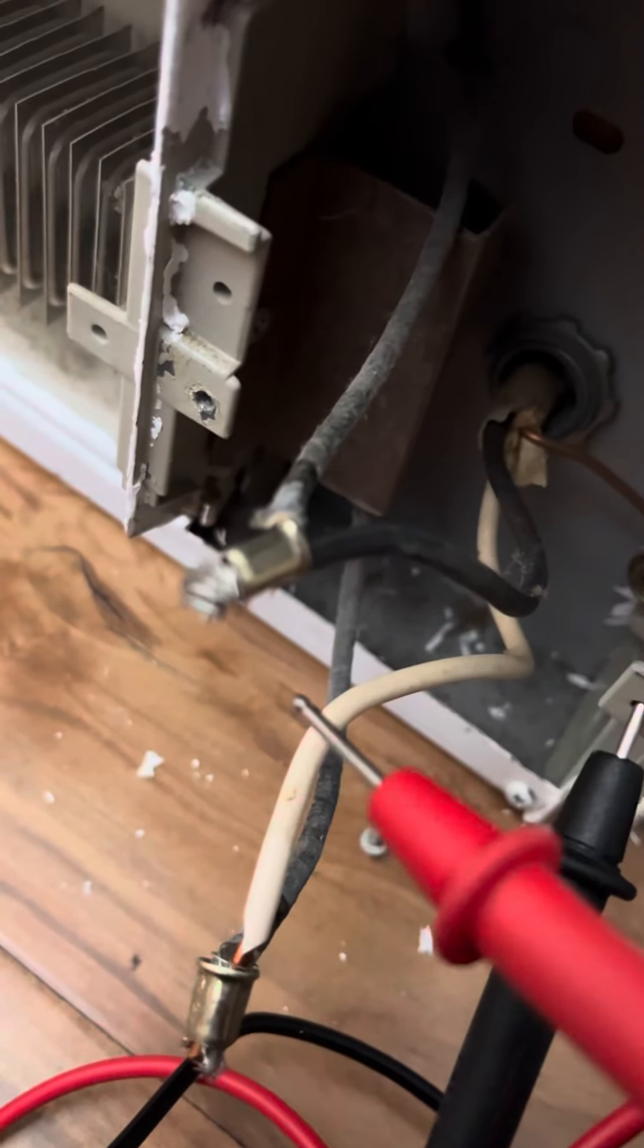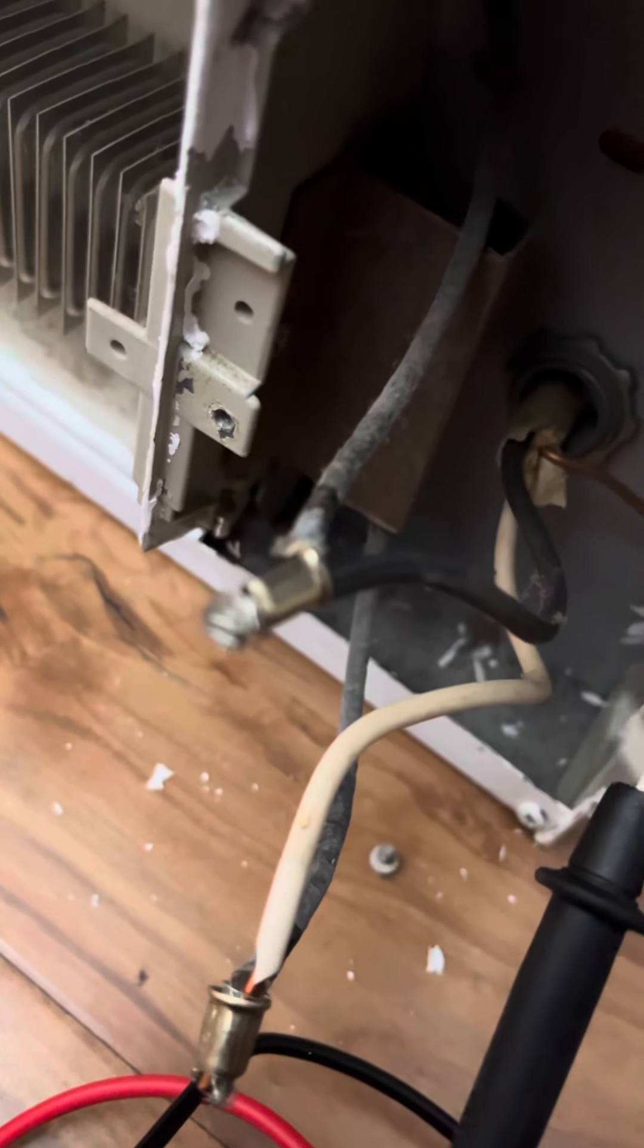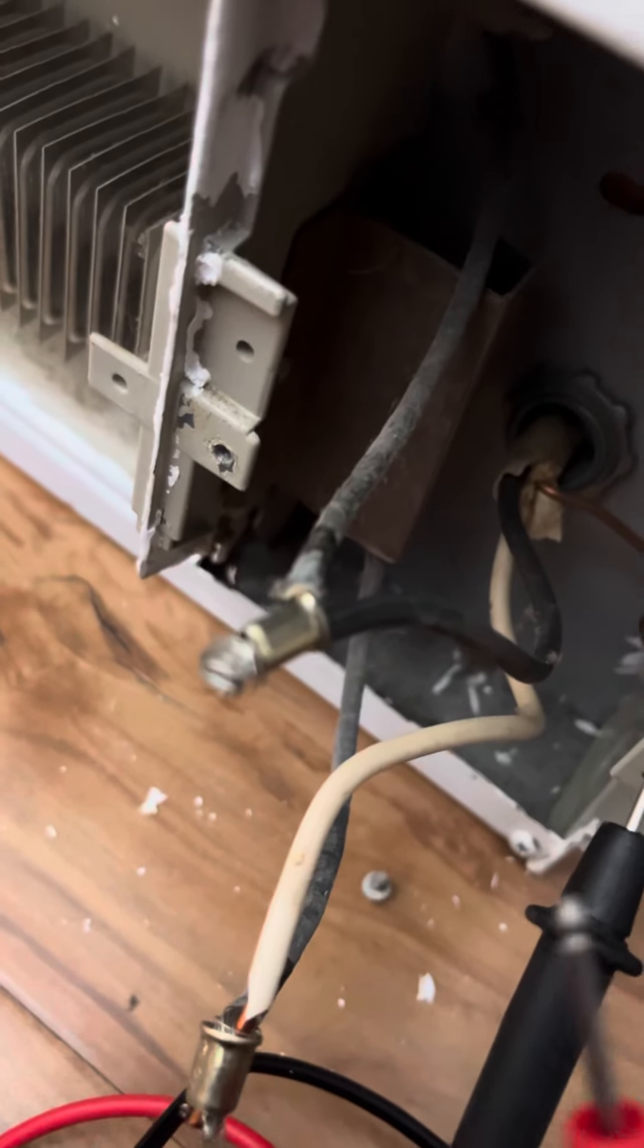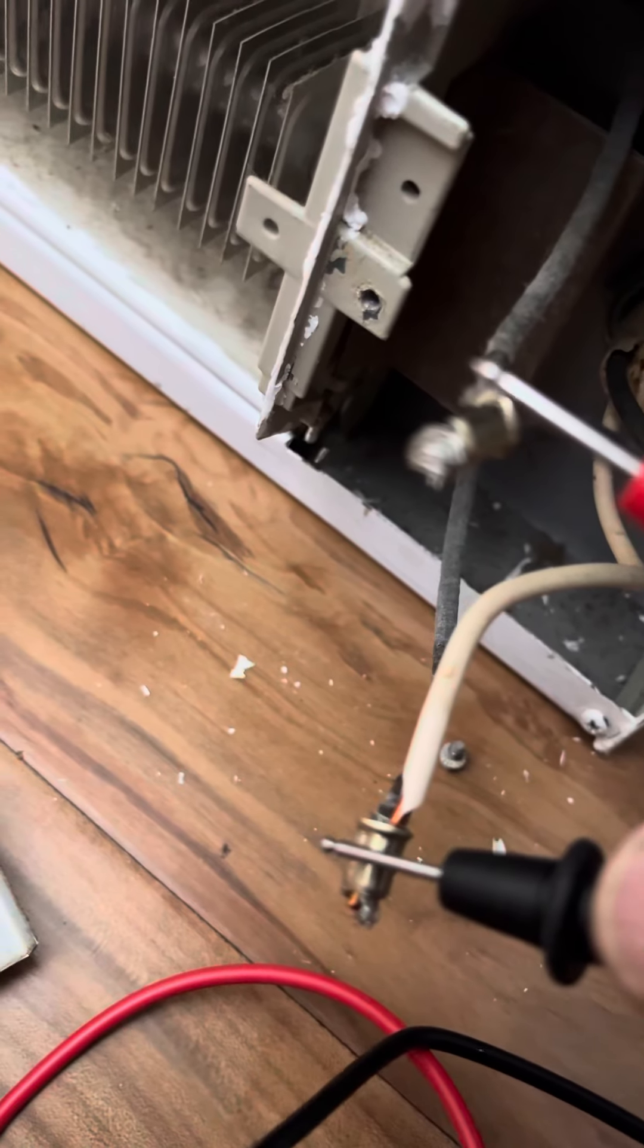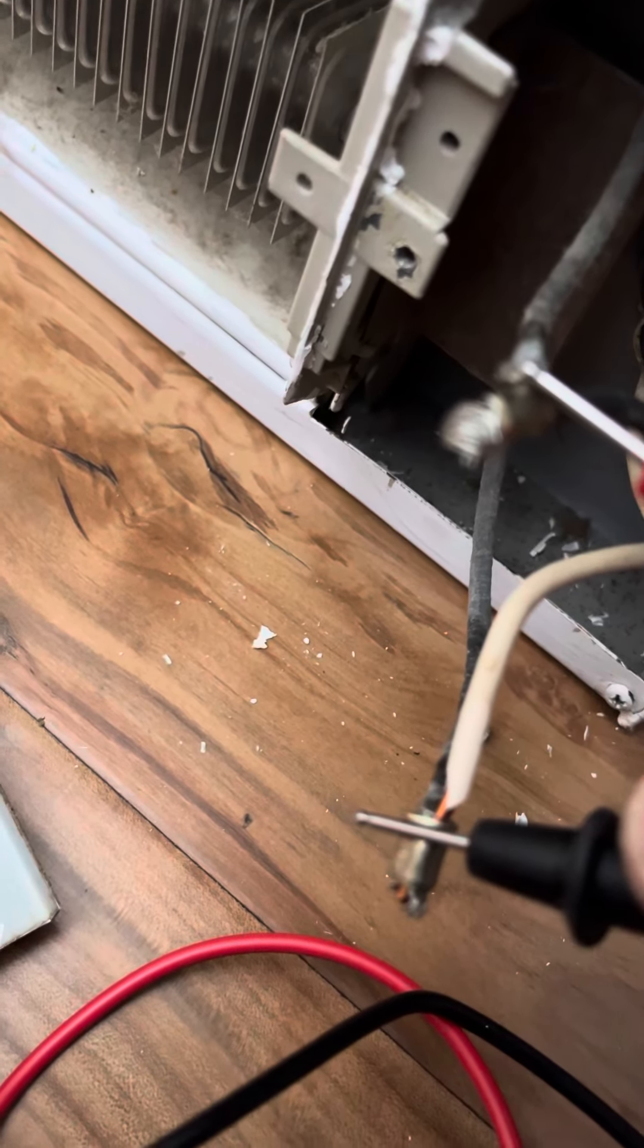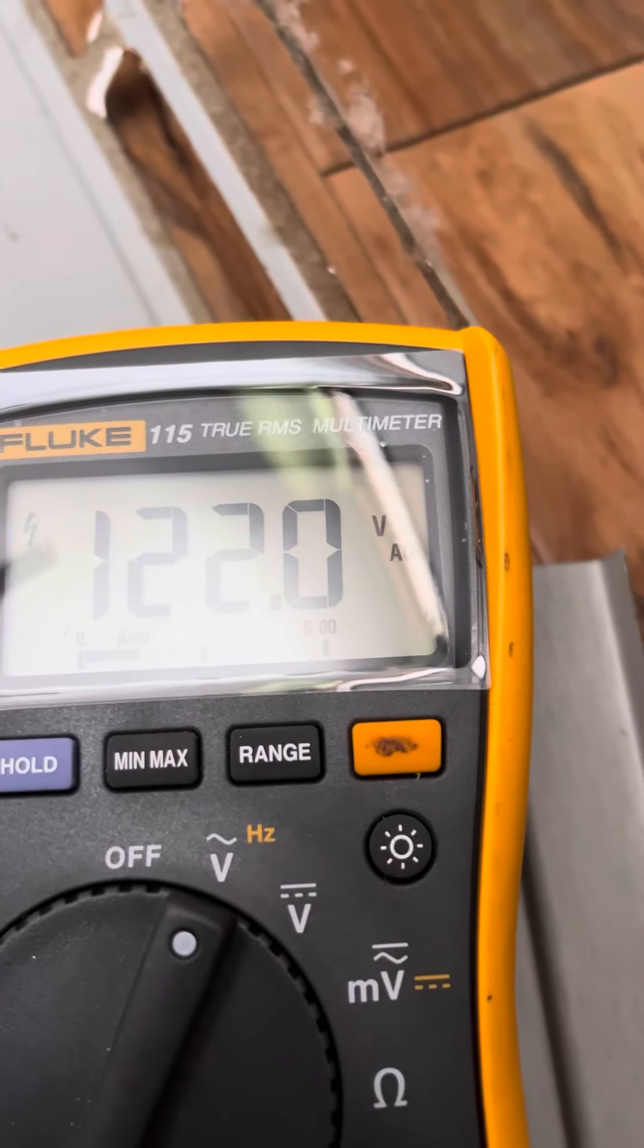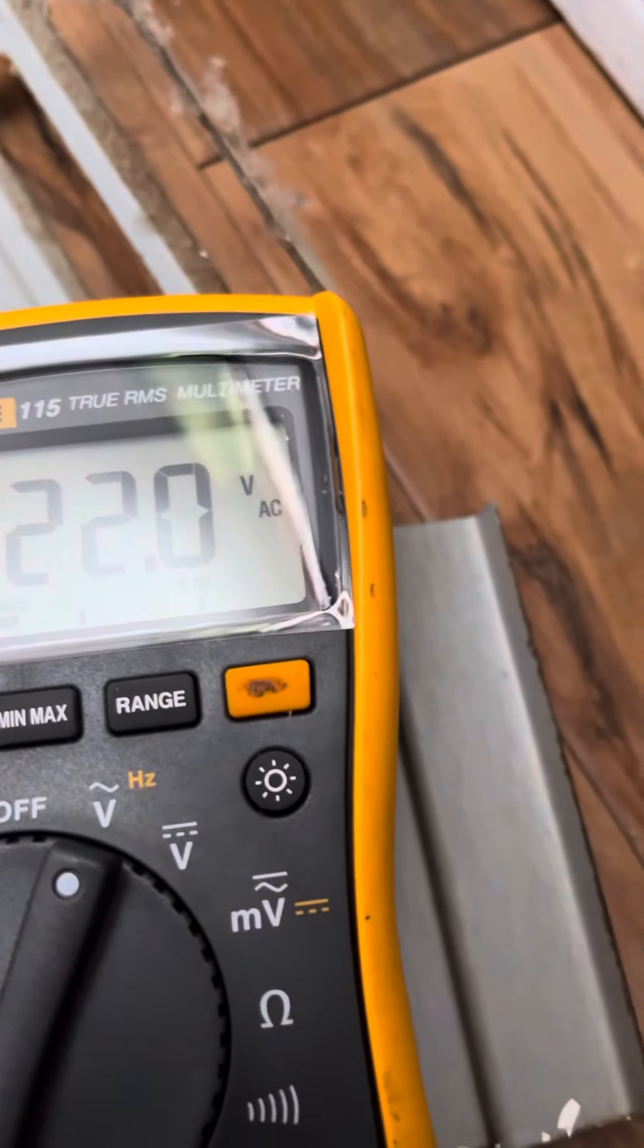If it was 120 and 120, there'd be 240. So this is telling me the power is 120 volts. You can also check it by putting the leads on both wires. You got 120 - it should be 240 if it was a 240 volt system.